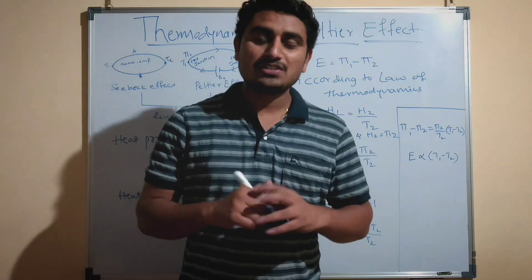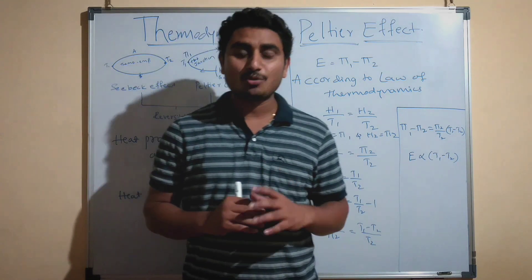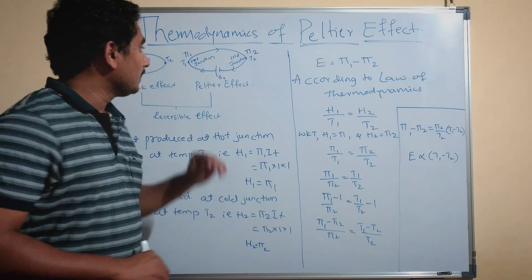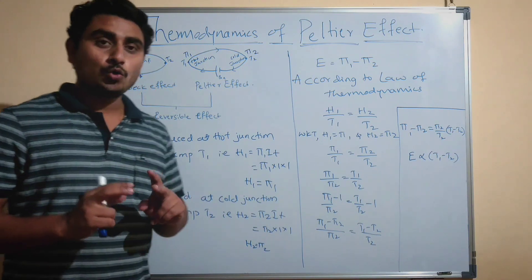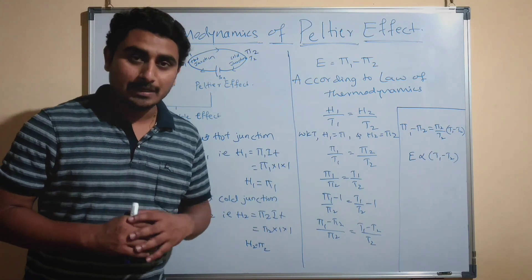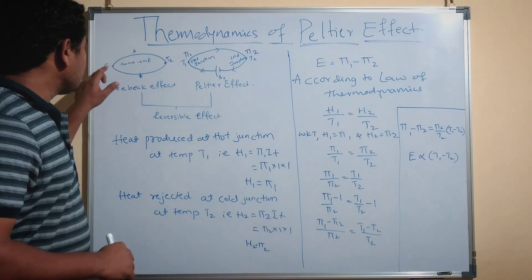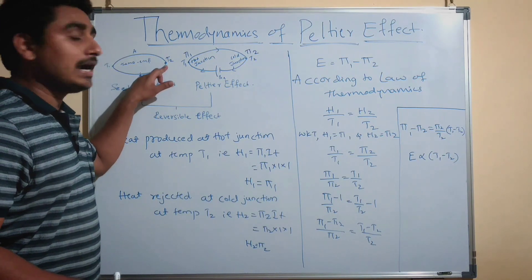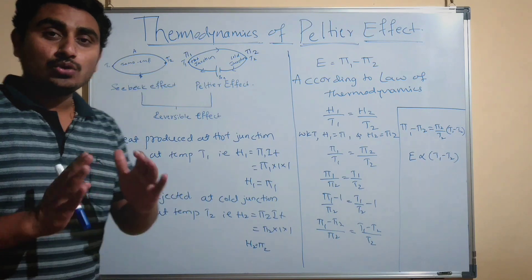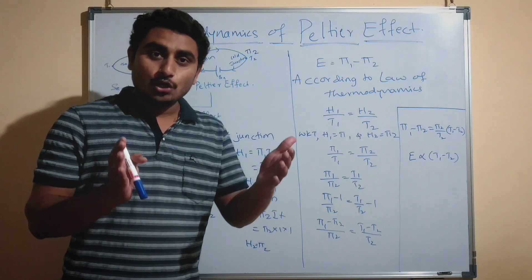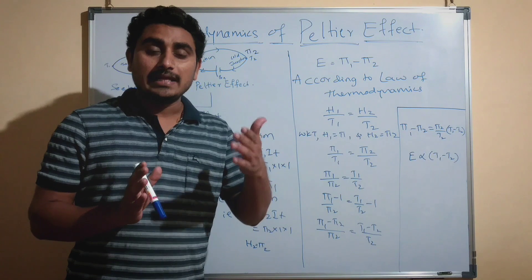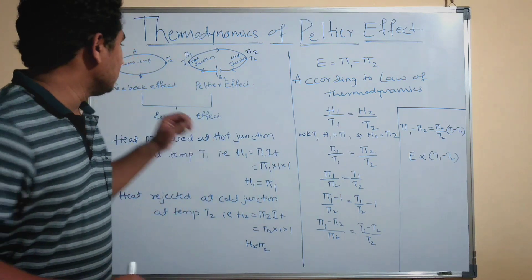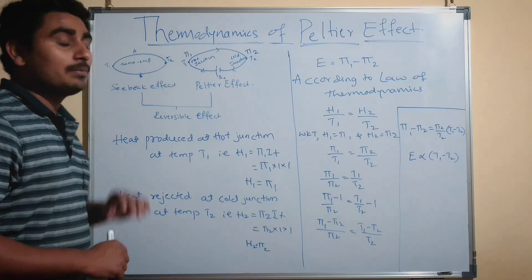Hello dear students. In this video lecture I am going to discuss about the thermodynamics of the Peltier effect. Consider a thermocouple consisting of two metals, metal A and B, with temperature T1 at the hot junction and temperature T2 at the cold junction. Due to the temperature difference between the two junctions of a thermocouple, there is an EMF produced in the circuit. This effect is nothing but the Seebeck effect.